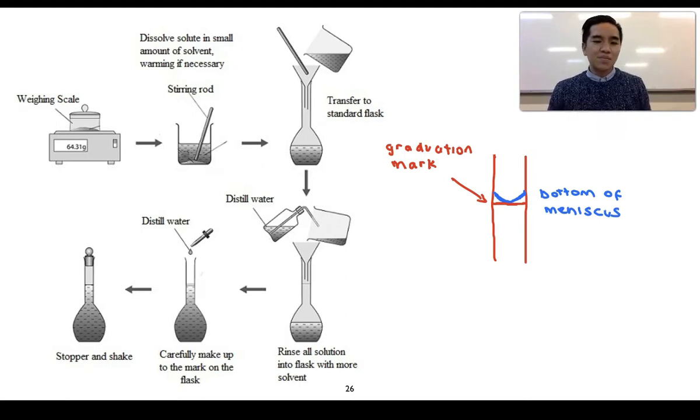What we want to ensure is that the bottom of the meniscus sits exactly on that graduation or calibration mark. Now it doesn't matter so much if you're a little bit under, because you can always add more water. But if you go over, then you essentially need to start again. We can't work out exactly how much volume is in it unless it sits exactly on that graduation mark.